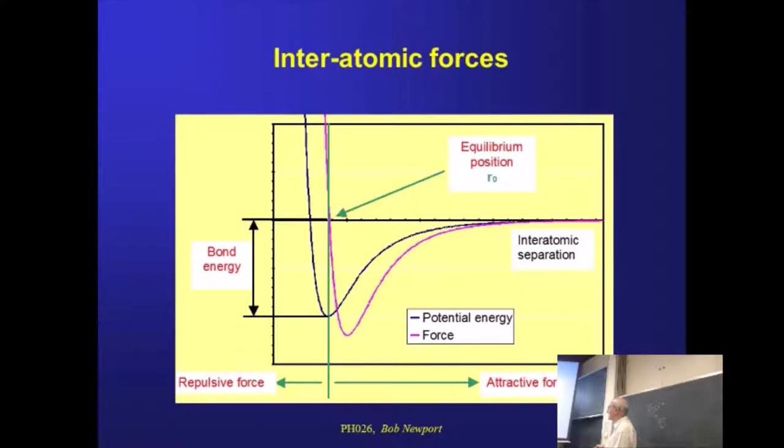So this graph is set up, essentially, you have to imagine that there is an atom sitting at the origin and there is a second atom out here somewhere, and we're moving it backwards and forwards along the x-axis, measuring the force between those two atoms. That's what that pink graph is telling us about.